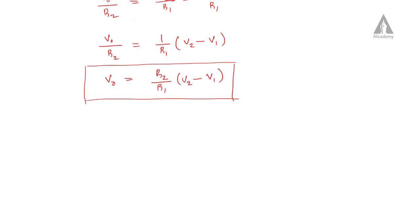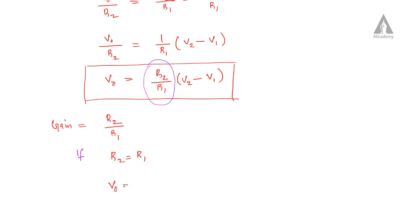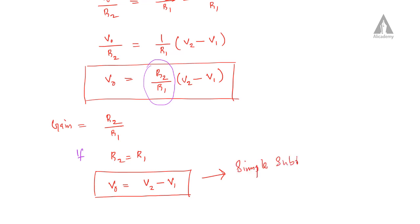The gain is equal to R2 by R1. The output voltage is equal to the difference of V2 minus V1, multiplied by the gain. If R2 equals R1, then V0 will be equal to V2 minus V1. This is the simple subtractor case — the output is simply the difference of the two input voltages.